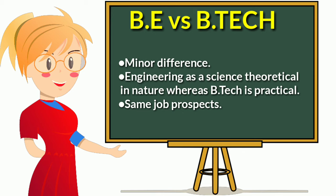Engineering is science. Bachelor of Engineering is BE; Bachelor of Technology is B.Tech. BE is more theoretical, while B.Tech is more practical. In B.Tech, you include current technology in practical and theoretical aspects. In engineering, you also have both practical and theoretical components, but B.Tech allows you to update with current technology.